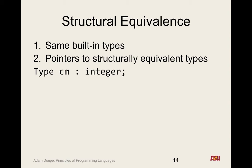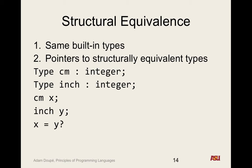Let's look at an example: we define type centimeters as an integer and type inch as an integer. Under structural equivalence, can we assign x equals y? Yes — now we can, because they have the same structure; they're both the same basic type underneath.